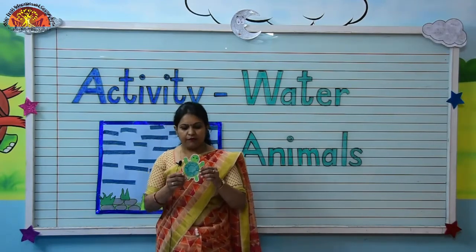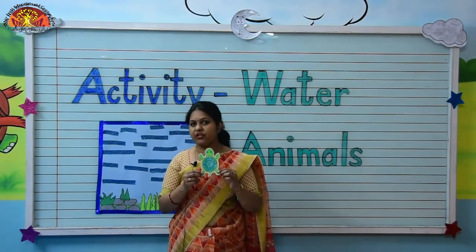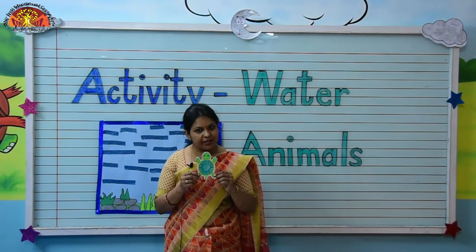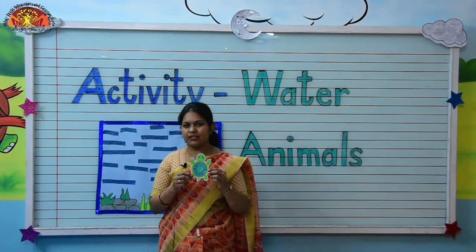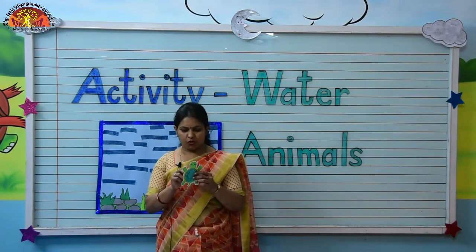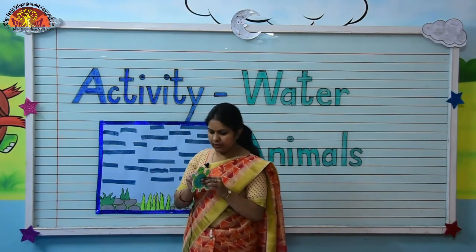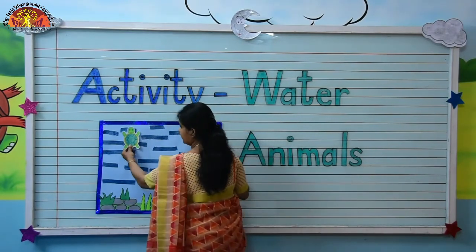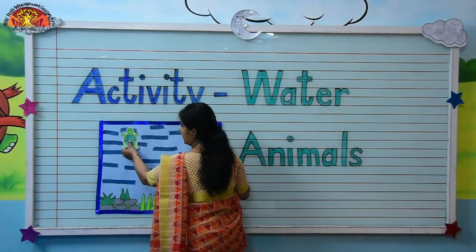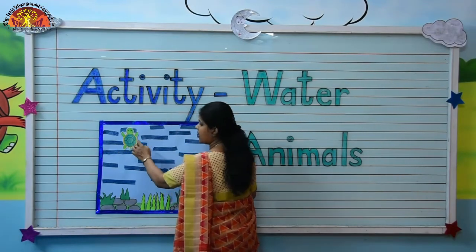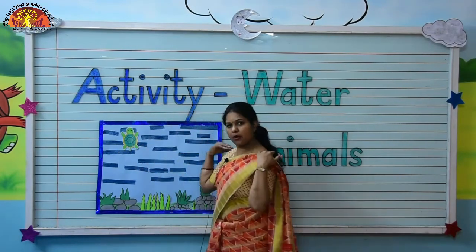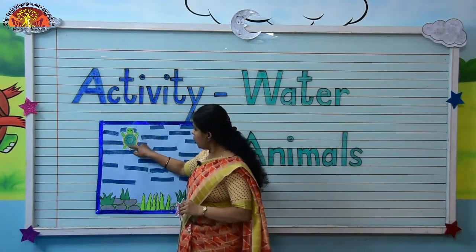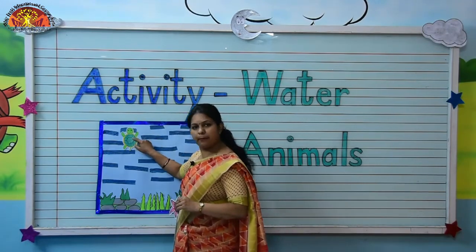So kids, first tell me which water animal is this? This is a turtle. Very good! We will paste it on the chart. Turtle has a hard shell on its back.